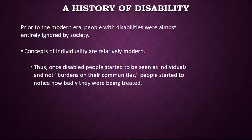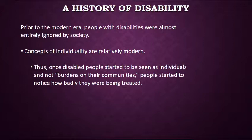Now let's talk about the history of disability in the United States. Prior to the modern era, people with disabilities were almost entirely ignored by society. This is largely because concepts of individuality are relatively modern — prior to the modern era, you as an individual with individual human rights did not matter. You were part of society, part of the tribe, part of the nation, a vassal of the king. Thus, people with disabilities were thought of as burdens on the community — people that could not pull their own weight — and were treated very badly by modern standards.